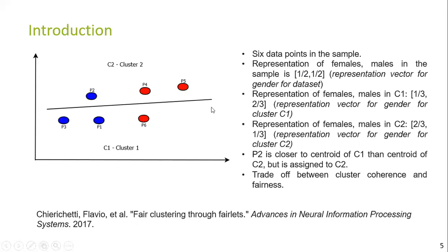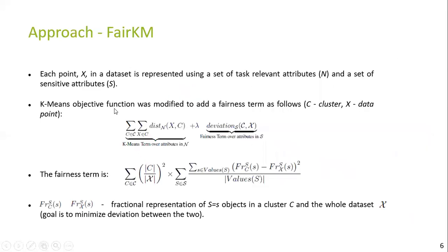It should be noted that even though point P2 is closer to the centroid of cluster C1 than C2, it is assigned to the second cluster. Hence, there is a trade-off between cluster coherence and fairness. Next, I'll describe our approach.